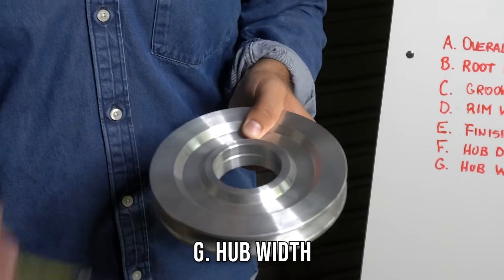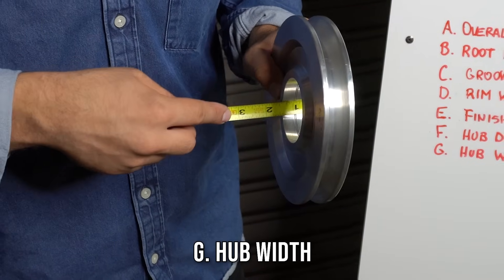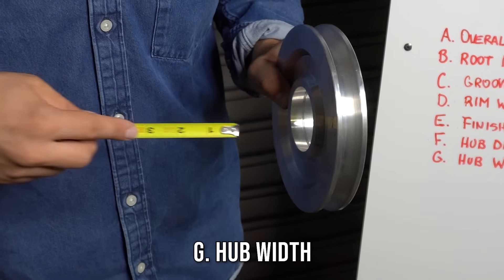For the hub width we put the ruler in the bore and we measure the width of the hub which in this case is one inch.